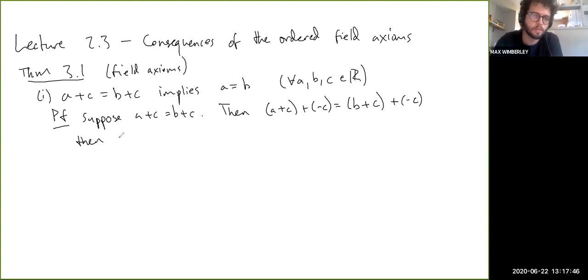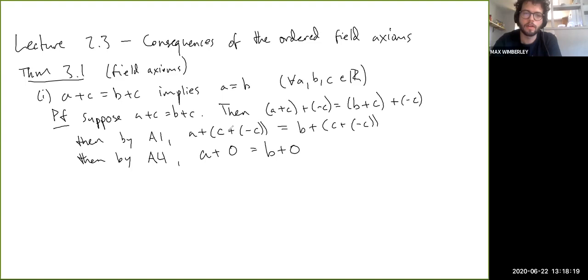So then by A1 we can reassociate the parentheses here. So we get a plus (c plus negative c) equals b plus (c plus negative c), right? So then by now we can cancel these things. So by A4, a plus 0 equals b plus 0. And remember that actually, so up here we're also actually implicitly using A4 to define the symbol negative c, right? A4 actually tells us that negative c exists and has this property, right?